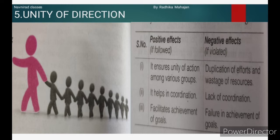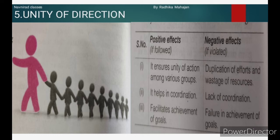Principle 5: Unity of Direction. It implies that there should be one head and one plan for a group of activities having the same objective. All related activities should be put under one group and be in the control of one manager. If followed: it ensures unity of action among various groups, helps in coordination, and facilitates achievement of goals. If violated: duplication of efforts and wastage of resources, lack of coordination, and failure in achievement of goals.